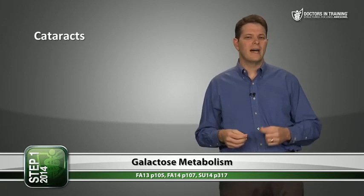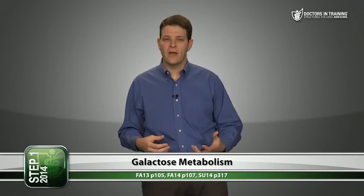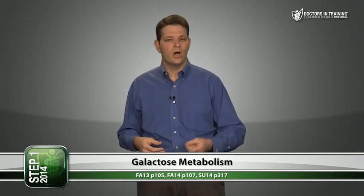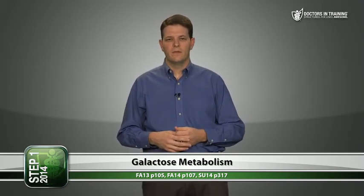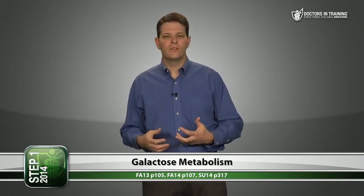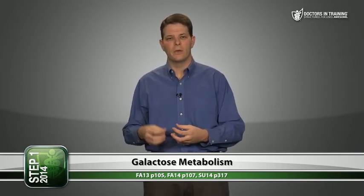Classic galactosemia is due to absence of the enzyme galactose 1-phosphate uridyltransferase. You get excess galactose and galactitol in blood and urine, worse cataracts, plus hepatomegaly, jaundice, failure to thrive, and intellectual disability. Treatment is to exclude galactose from the diet, and also lactose — since lactose is a disaccharide of glucose plus galactose.